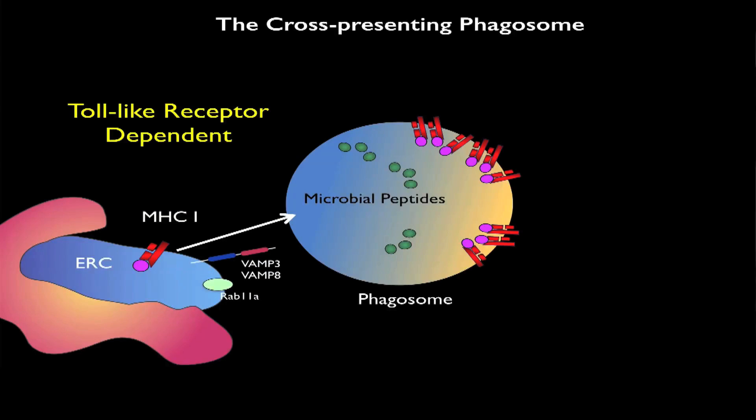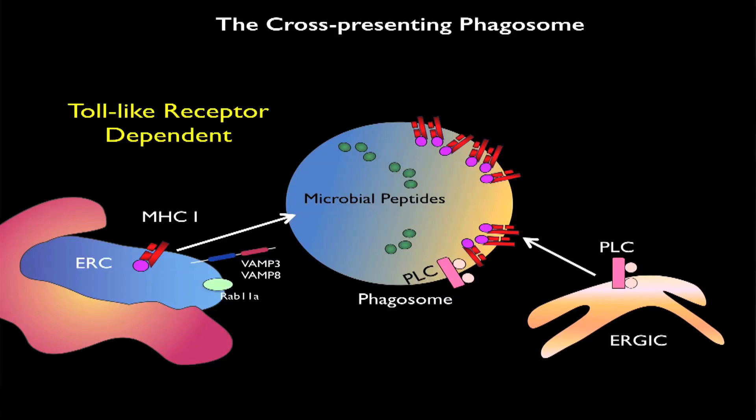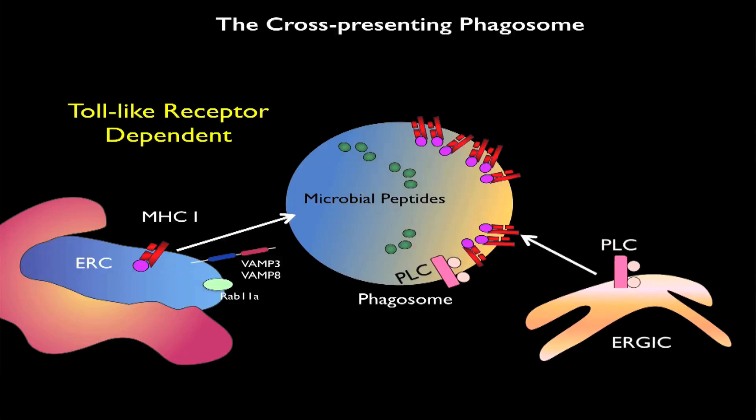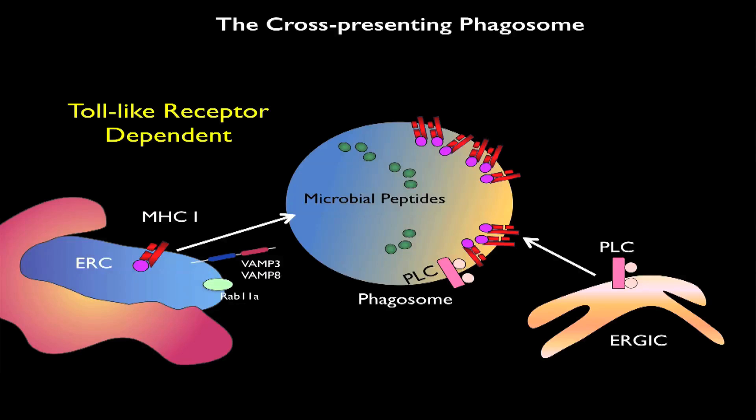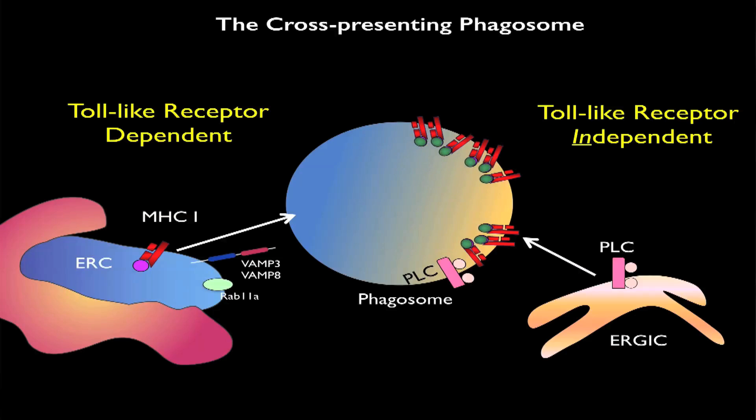However, this is still not sufficient to load microbial proteins onto these newly recruited ERC-resident MHC class 1 molecules. So to facilitate this, components of the so-called peptide loading complex must also be brought to this compartment. These were already known to come from yet a different compartment called the ER-Golgi intermediate compartment, or the ERGIC. We found that this step can occur independently of toll-like receptor signaling and helps in the final step of loading microbial peptides onto MHC class 1 molecules. So by bringing all these components together from different sources, the phagosome now turns into a compartment that is licensed to specifically and efficiently load microbial peptides onto MHC class 1 molecules and use those peptides to activate CD8 T cells.